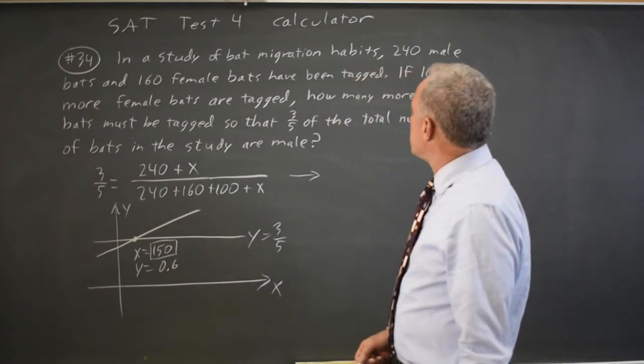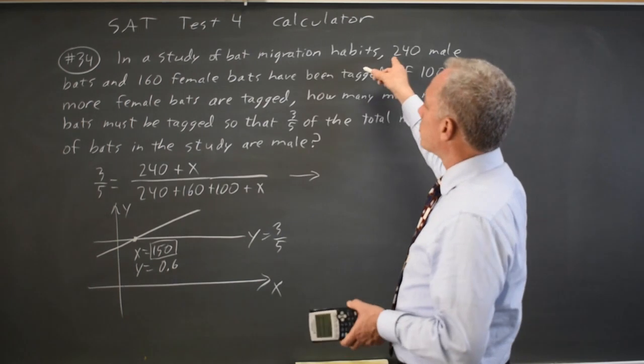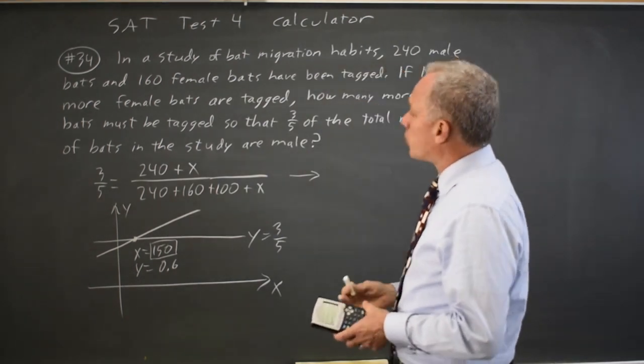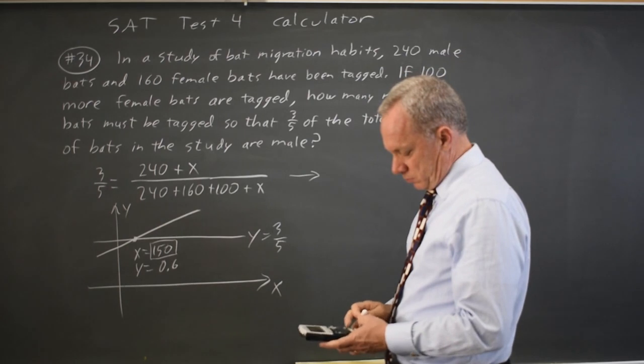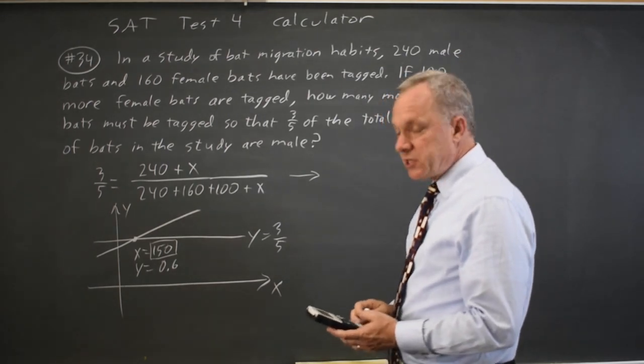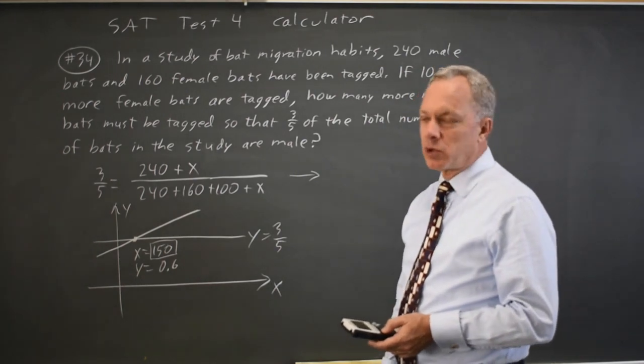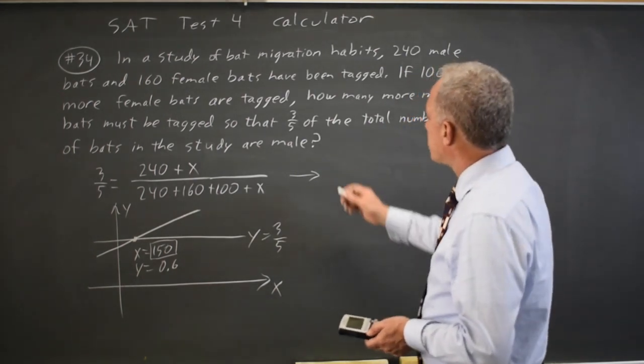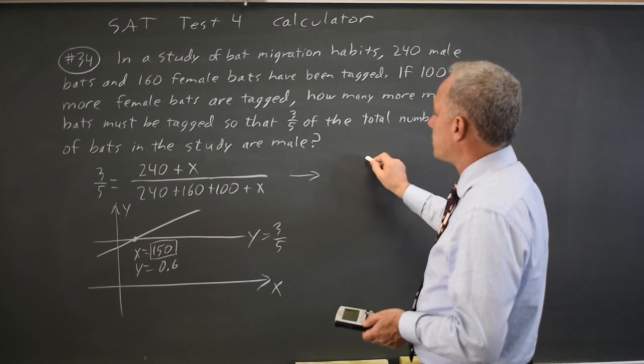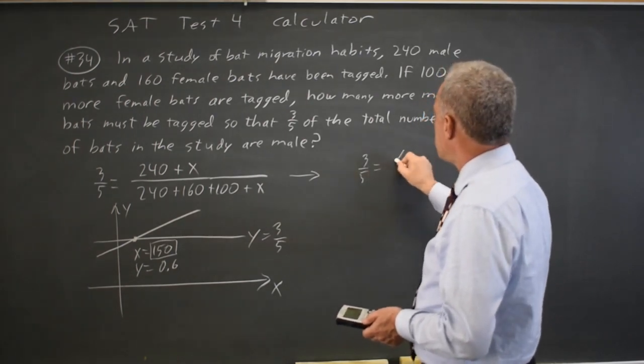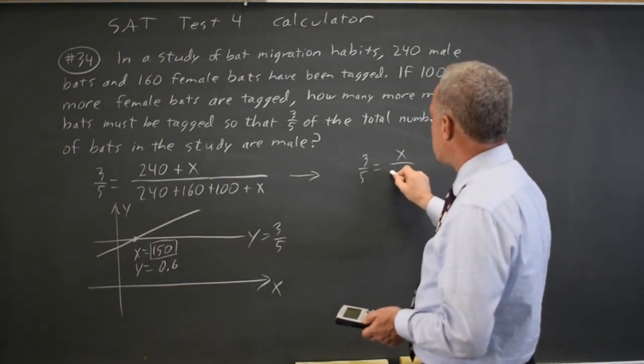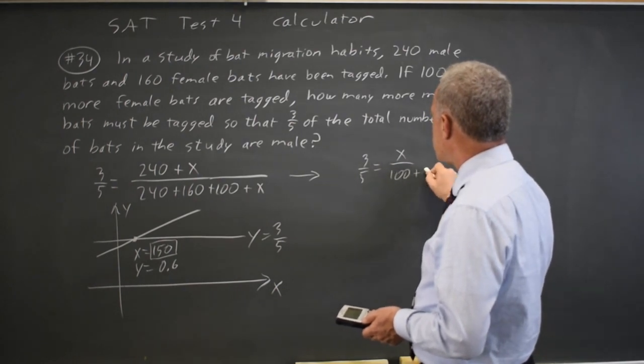Another way of doing this is we had 240 out of 400 bats, which is three-fifths. So three-fifths of the original bats were male. I just need three-fifths of the new bats. So we could call that three-fifths equals x male over the 100 females we have plus x.